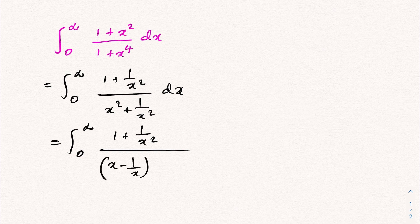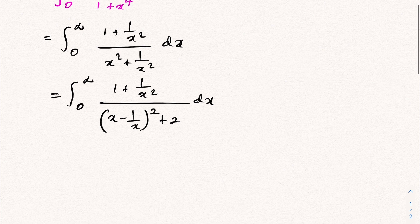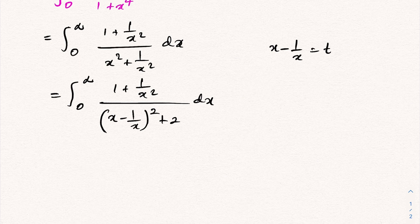I'm going to take a substitution: x minus 1 over x equals t. Then if we differentiate, we have 1 plus 1 over x square dx is equal to dt.